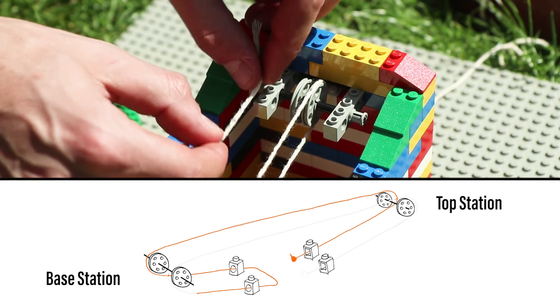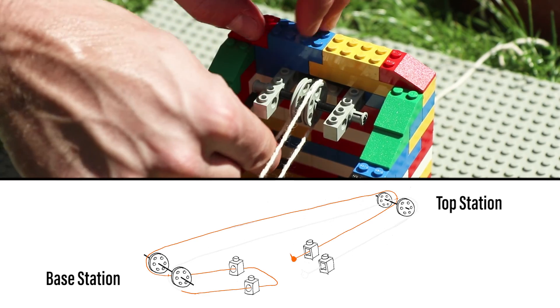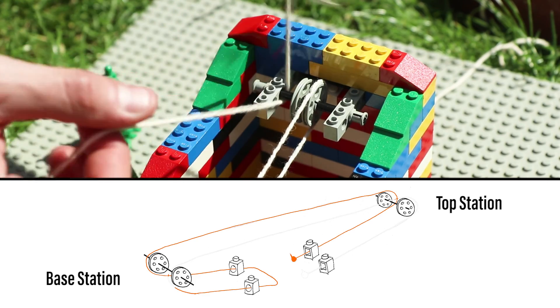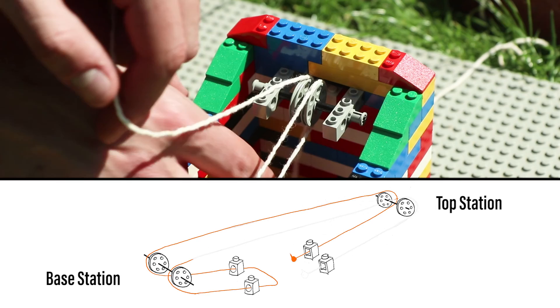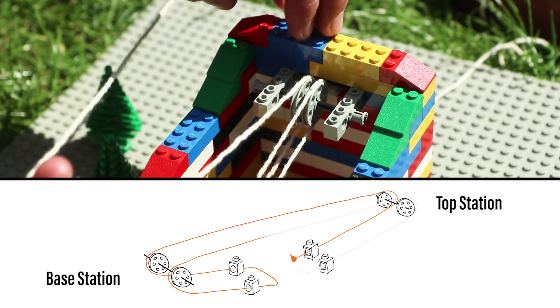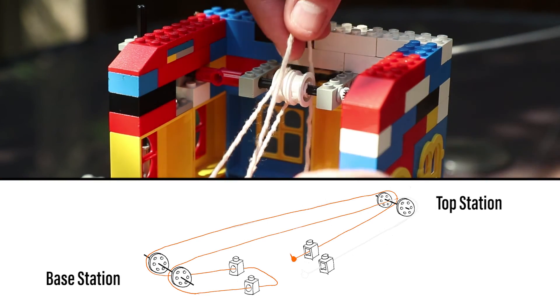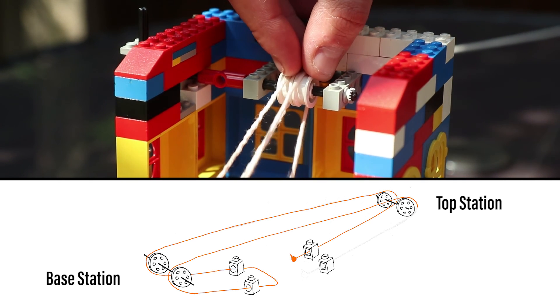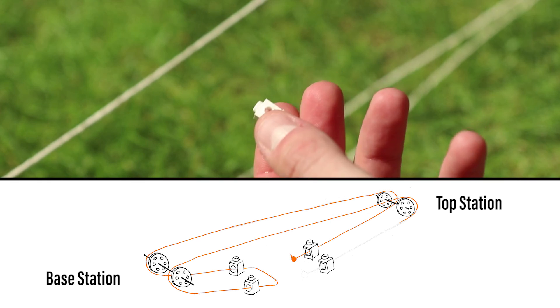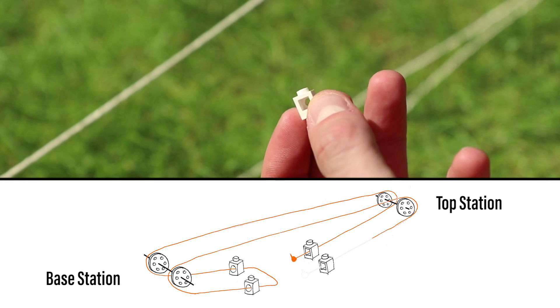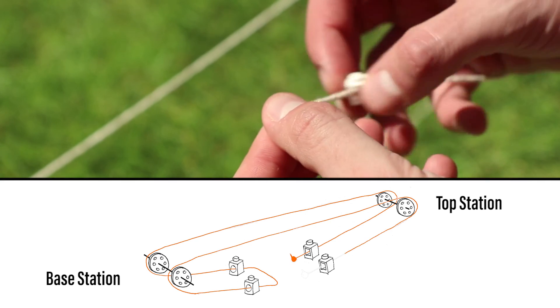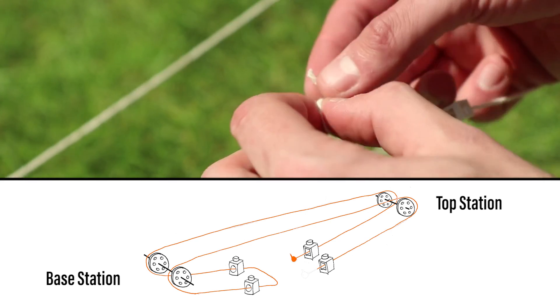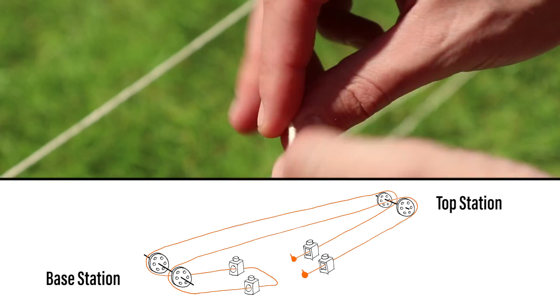Now thread this piece of string from under the left hand side wheel of the base station, then over the wheel up to the top station. At the top station thread the string over the top of the right hand wheel and then thread it back down to the fixture which goes on top of the cable car. You should have one knob brick remaining with no string on, remove it and then thread the string through it and tie a knot in the end to make it secure.